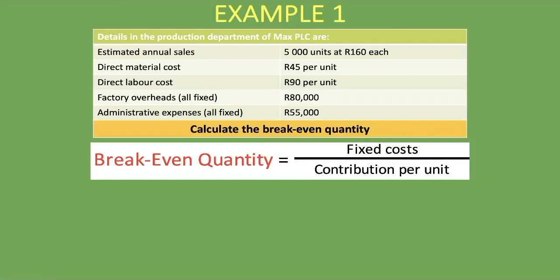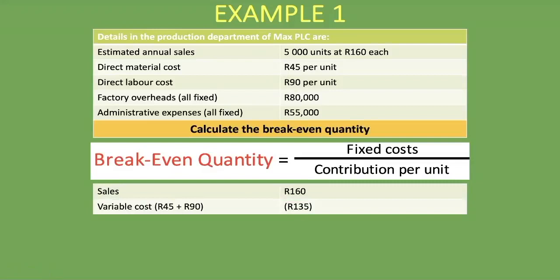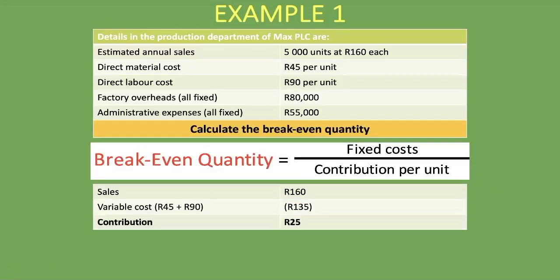How do we get contribution per unit? It's sales minus variable costs, giving us our contribution per unit. Our sales per unit is 160 rand. Our variable costs are direct material cost per unit plus direct labor cost per unit — that's 45 rand plus 90 rand — giving us variable costs of 135 rand. So 160 rand minus 135 rand gives us a contribution per unit of 25 rand. Now we have all the information we need.